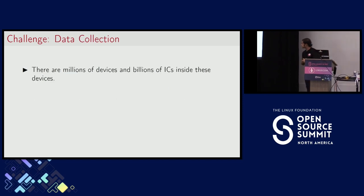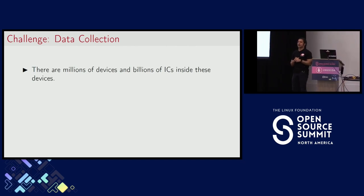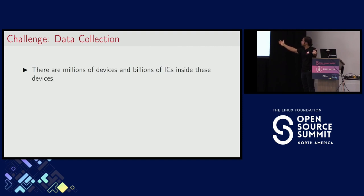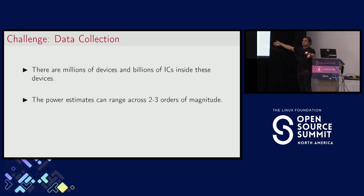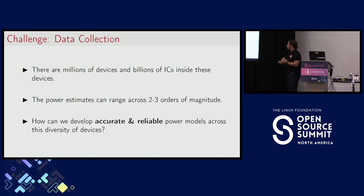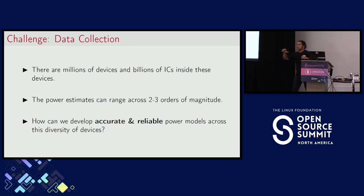Second challenge: data collection. The Linux ecosystem is fragmented compared to other ecosystems like Windows or macOS. There are millions of devices ranging from embedded systems running on a few milliwatts to data-center-class servers pulling 1,000 watts. We have a system that needs to operate reliably across three orders of magnitude. What is normal for a kilowatt system would completely obliterate a milliwatt reading — that scale needs to be very carefully tuned.